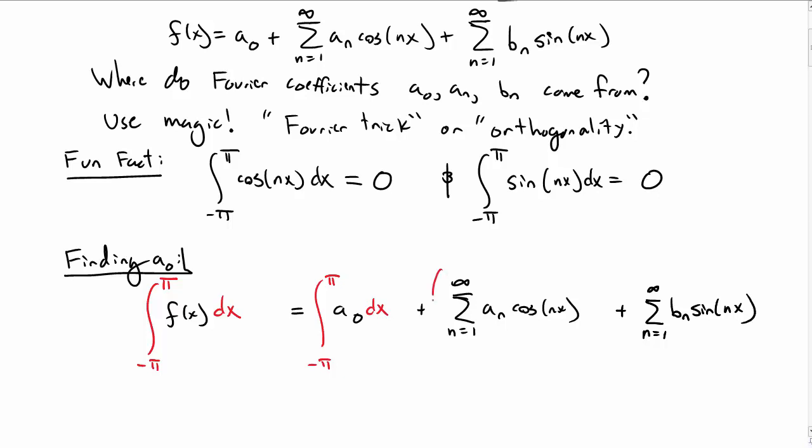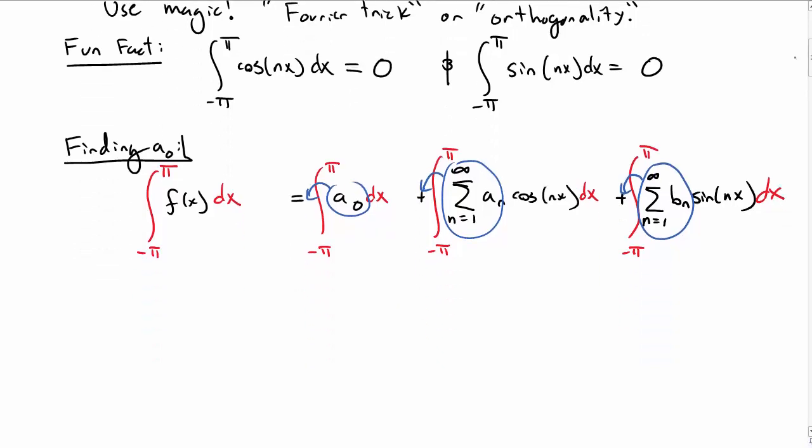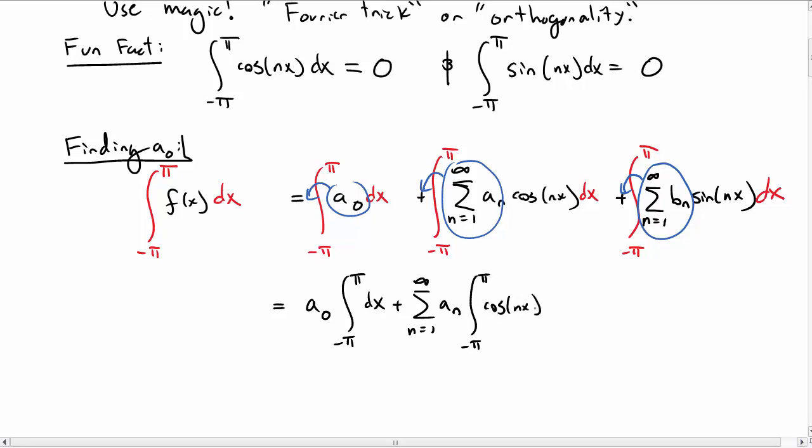Now, there's some constants I can pull out. I can pull out a₀. If you think about it, you can pull out the sum of the a sub n's and the sum of b sub n's. And so let's rewrite what we have then on the right-hand side. We have a₀, the integral from negative π to π of dx, the sum over the a sub n's, the integral from negative π to π, cosine of nx dx.